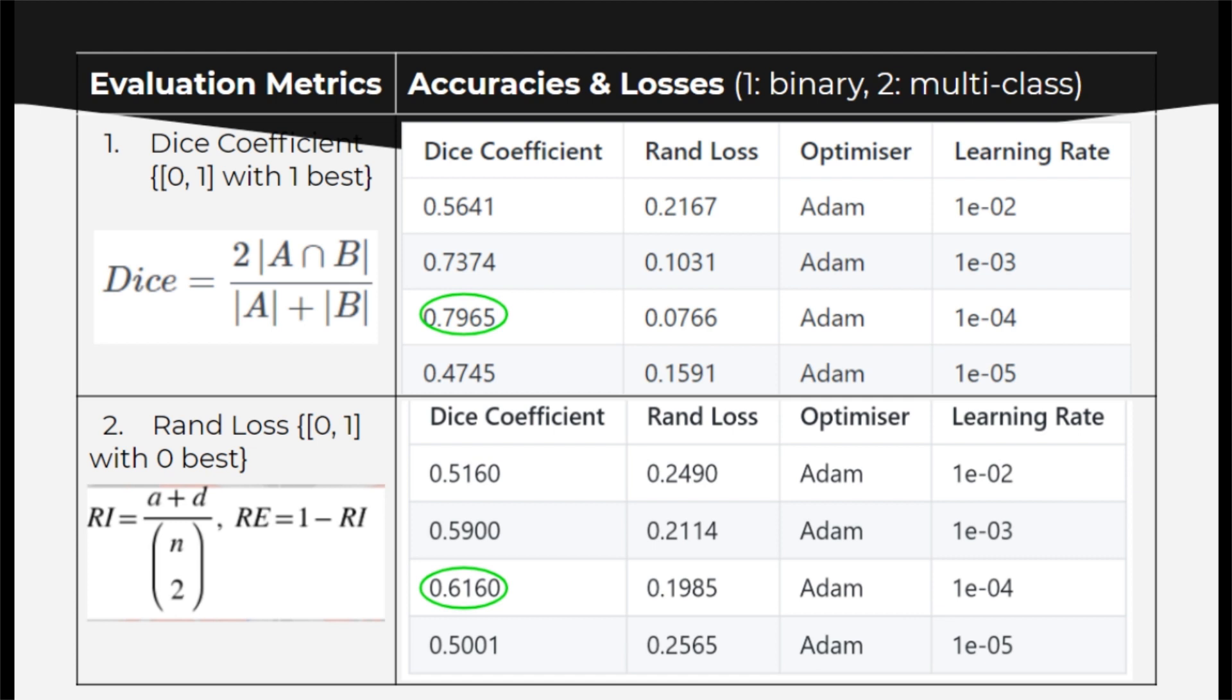For segmentation, I followed the convention and utilized evaluation metrics of Dice loss and IoU loss. As you can see, multi-class segmentation was the most challenging task, and its accuracy was severely constrained by the limited data I had access to.